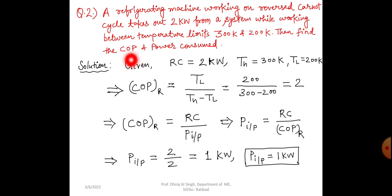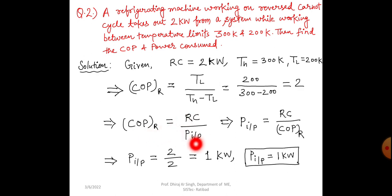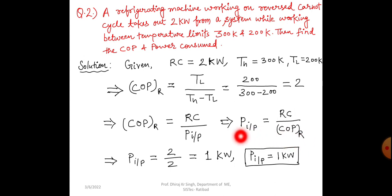The first part asked for coefficient of performance, which we found to be 2. Now for the second part — power consumed — we use the formula: coefficient of performance equals refrigeration capacity divided by power input. Rearranging, power input equals refrigeration capacity divided by COP. Solving this, power input is equal to 1 kilowatt.